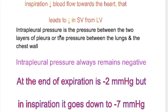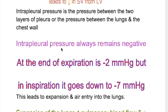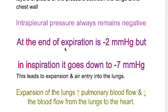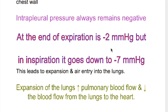Intrapleural pressure is the pressure between the two layers of pleura, and it always remains negative. At the end of expiration, it is minus 2 mmHg, but during inspiration it goes down to minus 7 mmHg.